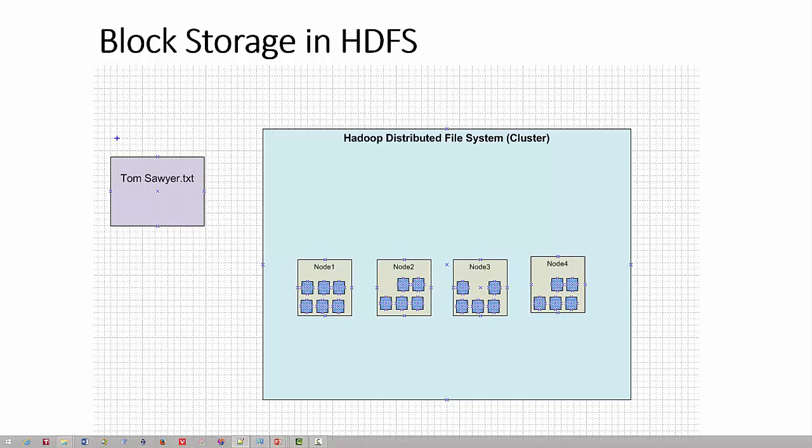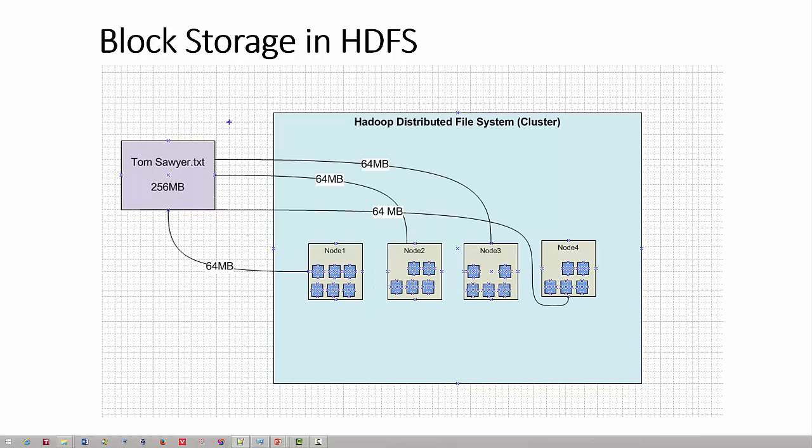HDFS will write the blocks of the file on multiple nodes. In the picture here, you can see that a file 'tomcat.text', which is 256 MB in size, is broken down into 64 MB blocks — which is the default size — and written to four nodes in the cluster. Hadoop is designed to handle very large files by dividing them into various blocks on different nodes.